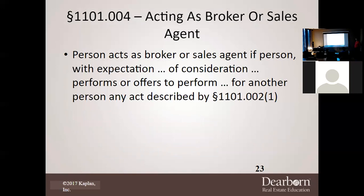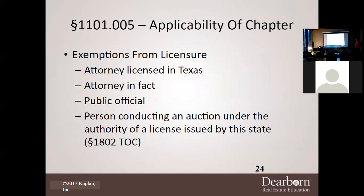Acting as a broker or sales agent: a person is going to act as a broker or sales agent if that person with the expectation of consideration performs or offers to perform for another person any act described in subsection 1101.002, subsection 1 — which is basically what we talked about earlier. Now, here's where they're going to get you on the test too — these are the individuals that are exempt from getting a real estate license, but there are rules to it.